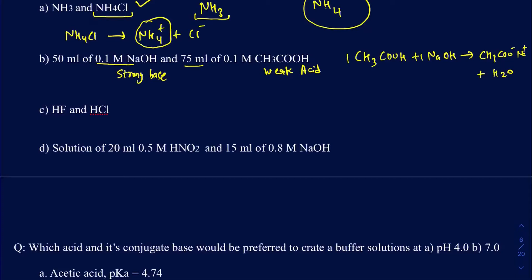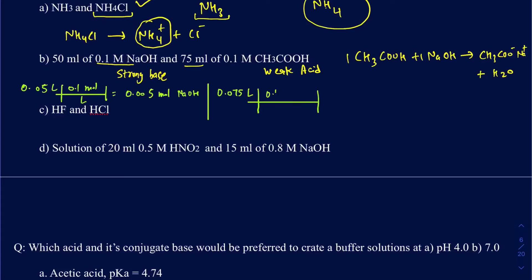Starting with 50 mL of NaOH: 0.05 L × 0.1 mol/L = 0.005 moles of NaOH. For the acid: 75 mL = 0.075 L × 0.1 mol/L = 0.0075 moles of acid. You clearly have more moles of acid than moles of base you're adding, and since it's a 1-to-1 mole ratio, you will lose some of the acid.